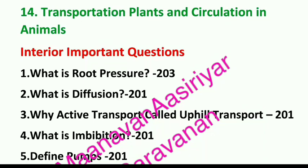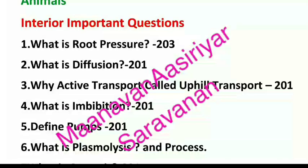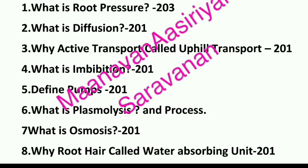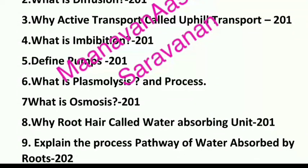Page number 23. What is diffusion? Page number 21. Why is active transport called uphill transport? Page number 21. What is imbibition? Define pumps. What is plasmolysis? Plasmolysis is one of the diagram-based processes — let's draw the diagram. What is osmosis? Page number 21.